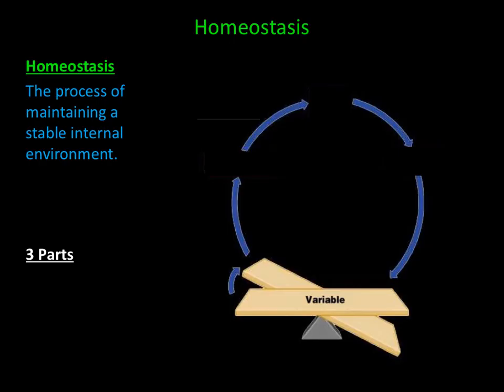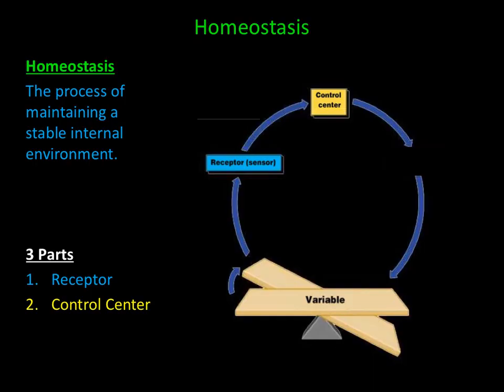There are three parts within the human body that help maintain homeostasis. The first part is a receptor, the second is the control center, and the third is an effector. Using the illustration, let's take a look at how homeostasis is maintained.